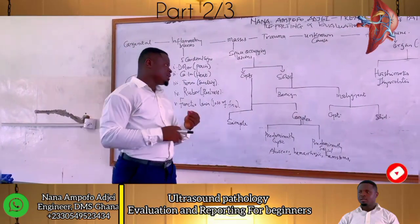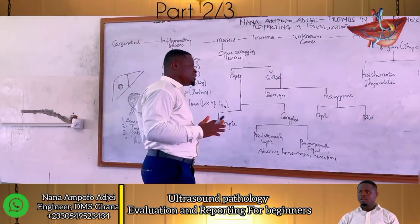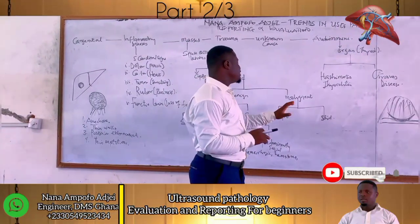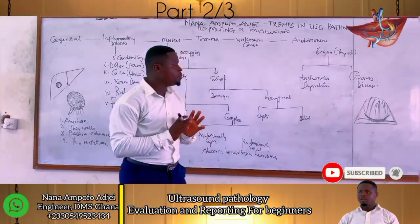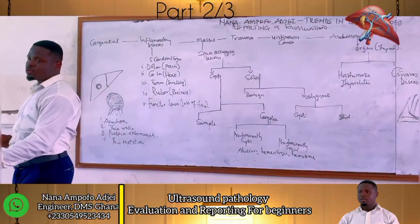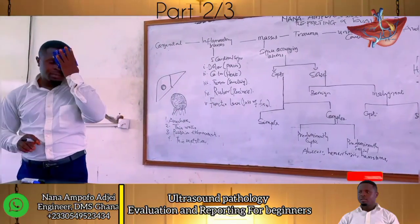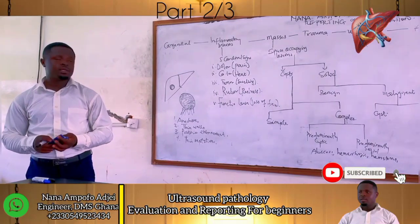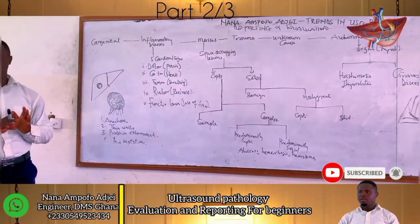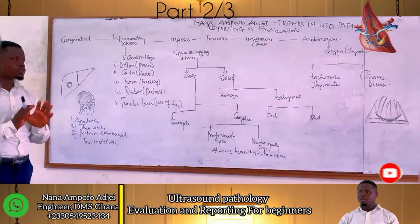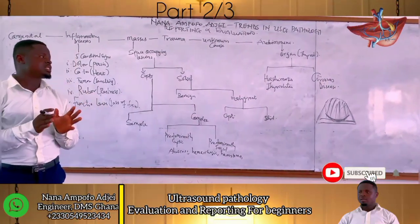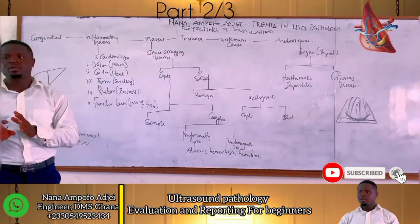And then we have malignant lesions. If a lesion is malignant, it could be a cystic mass or a solid mass. Depending on the sonographic criteria, it could be a cystic mass or solid mass. Then we will talk about the shape, and the symptoms are described in those pathways.